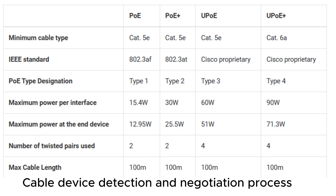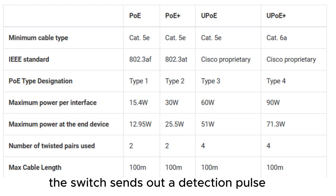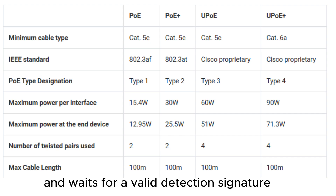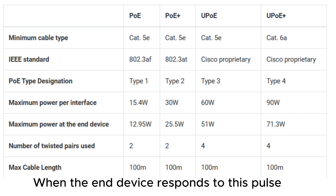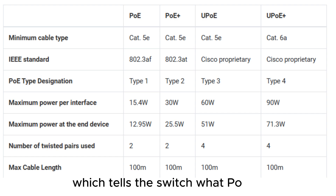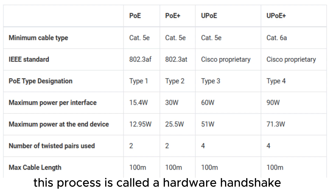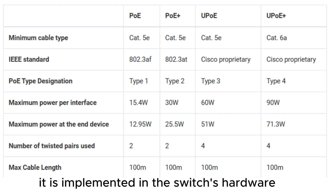Device Detection and Negotiation Process: When you connect an end device to a PoE-enabled interface, the switch sends out a detection pulse and waits for a valid detection signature, as defined in 802.3af/at. When the end device responds to this pulse by drawing a standard amount of current — which tells the switch what PoE class the end client is — this process is called a hardware handshake, or PoE handshake, and it is implemented in the switch's hardware.